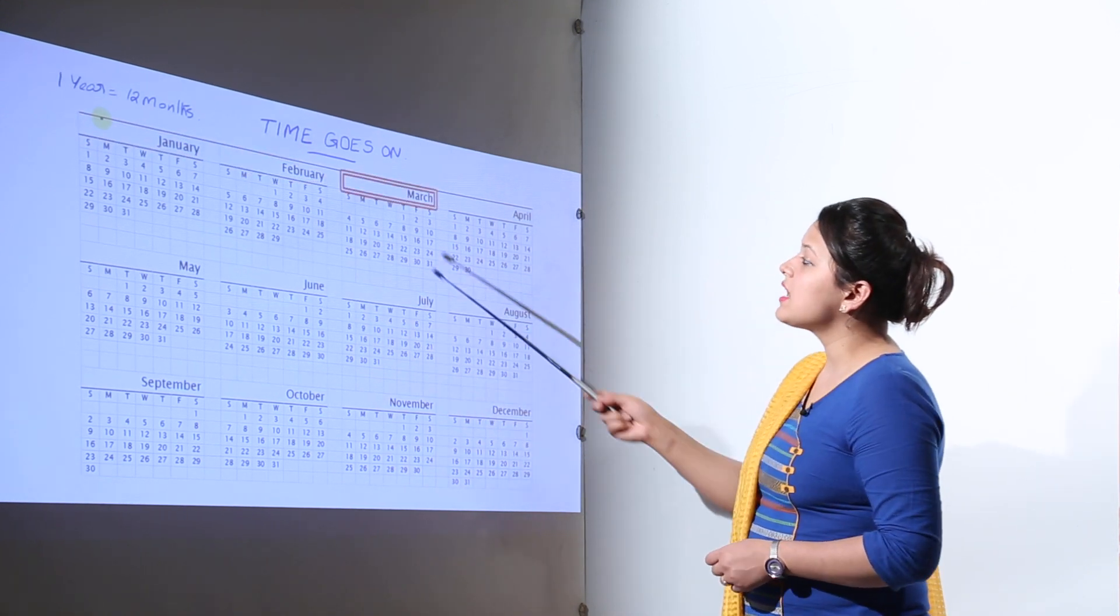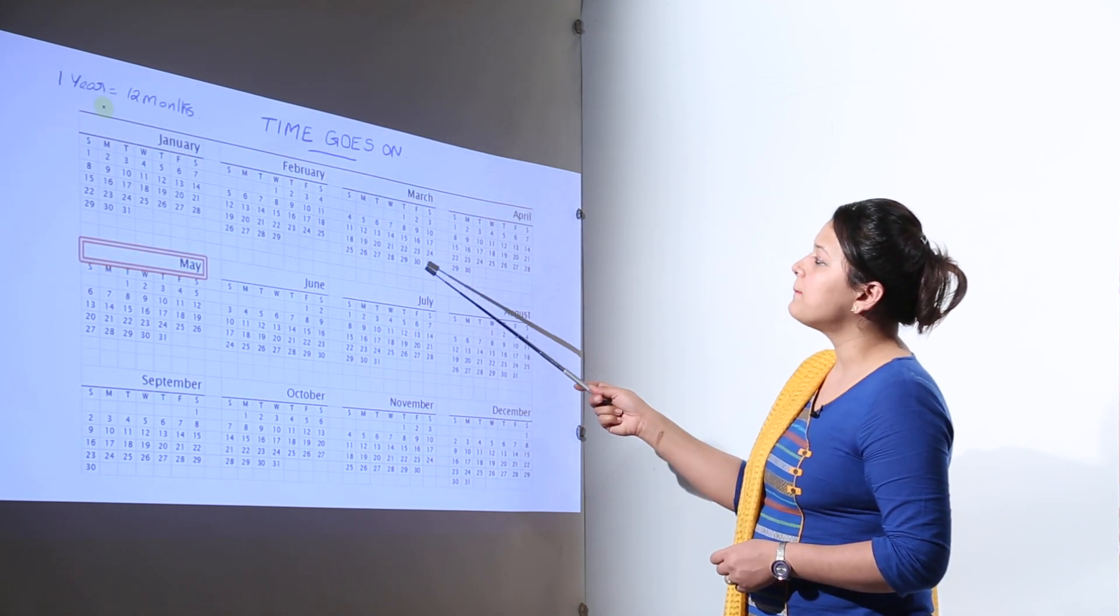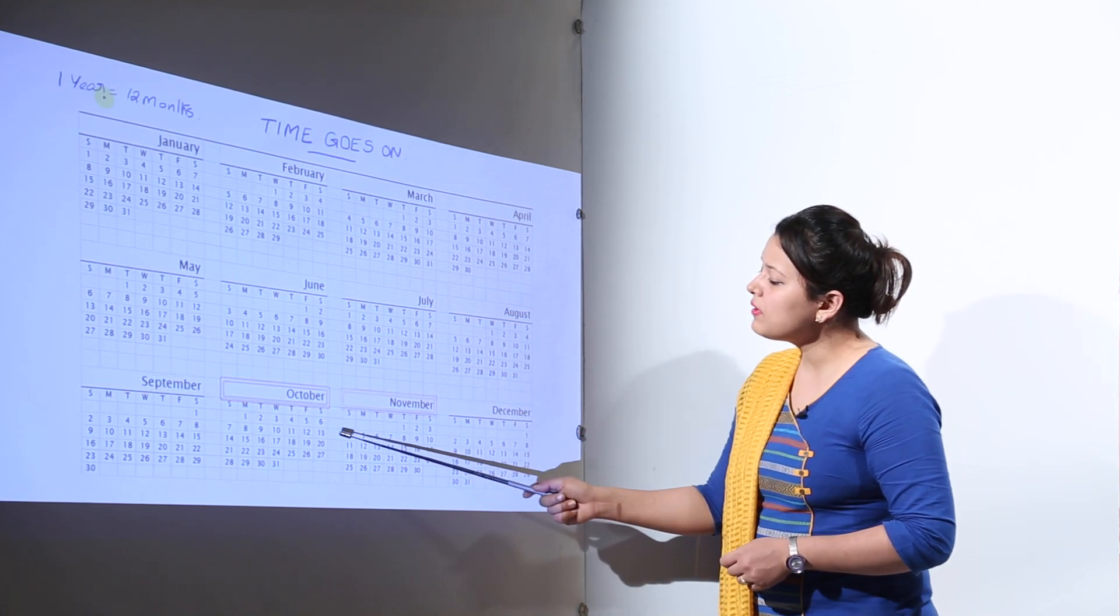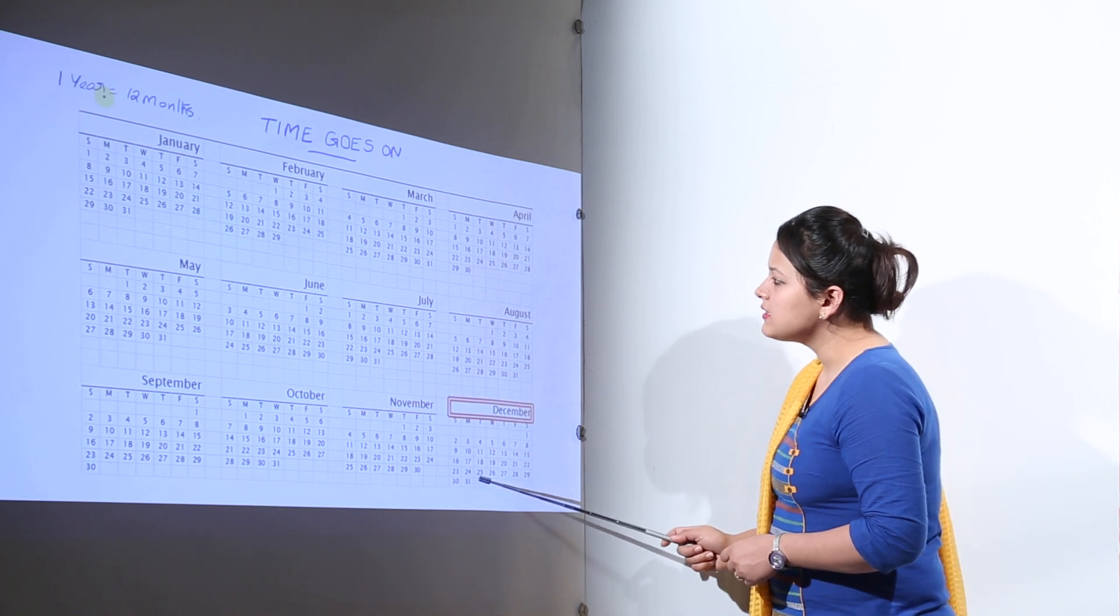Now those months are January, February, March, April, May, June, July, August, September, October, November and December. So these are the 12 months.